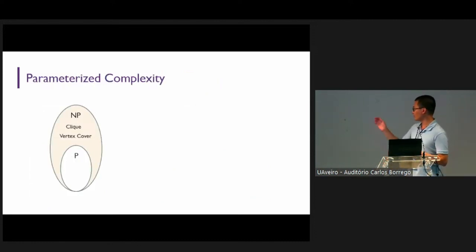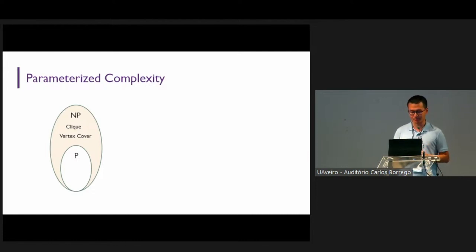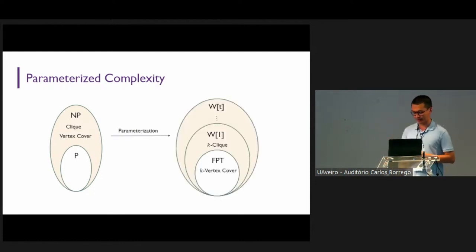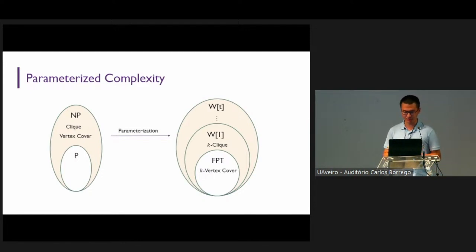This is the classical complexity theory world you might be familiar with. You have the P complexity class and the NP complexity class, and the clique problem and the vertex cover problem are both NP-complete, so they all fall into NP. However, after you parameterize these problems, they fall into a whole new hierarchy called the W hierarchy. For example, the vertex cover, after you parameterize it, falls into FPT — the analog of P in the parameterized complexity world. And for the clique problem, it falls into a class called W[1].